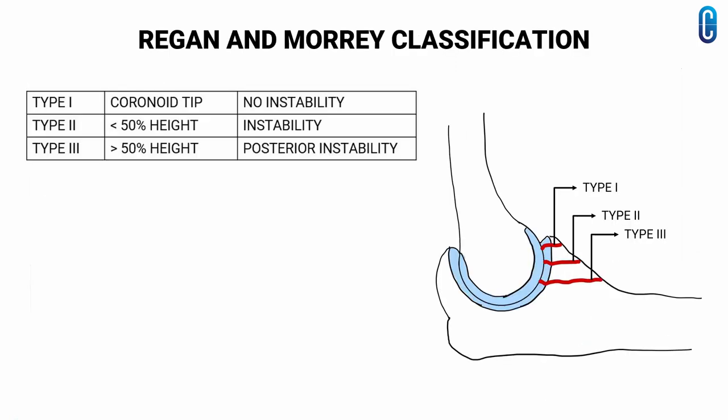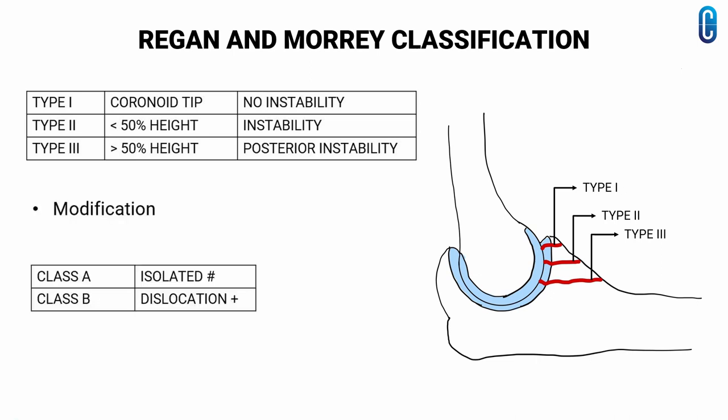Now coming to the classification of coronoid fractures. We have the Regan and Morrey classification, which is based on the coronoid height. Type 1 is fracture of the intra-articular tip of the coronoid — it produces no long-term instability. Type 2 is fracture involving half or less than half of the coronoid and may significantly affect ulno-humeral stability. Type 3 is fracture involving more than half of the coronoid process and is often associated with posterior instability. Each of these types was later subclassified into class A and B — class A is an isolated fracture of the coronoid and class B is coronoid fracture associated with elbow dislocation.